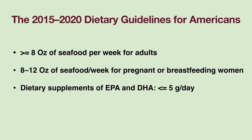Fish with lower mercury levels, such as salmon, herring, sardines, and trout, are preferred over fish with higher mercury levels, such as king mackerel, shark, swordfish, and tilefish.